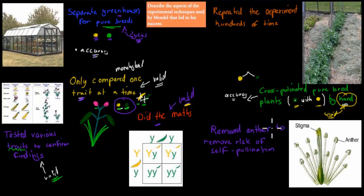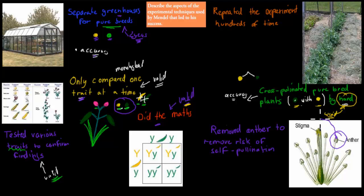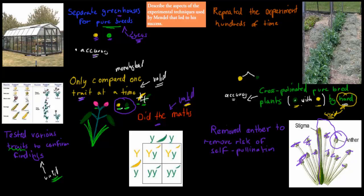When he cross-pollinated, he also removed the anthers — the male reproductive system of the plant. Every plant can actually self-pollinate, meaning its pollen, similar to sperm, can fertilize its own stigma. When he wanted to cross yellow with green, he didn't want the yellow plant to self-pollinate and just make more yellow ones. So he removed all the anthers to make sure self-pollination couldn't happen. This increased accuracy because there was no risk of self-pollination interfering with what he actually wanted to test.